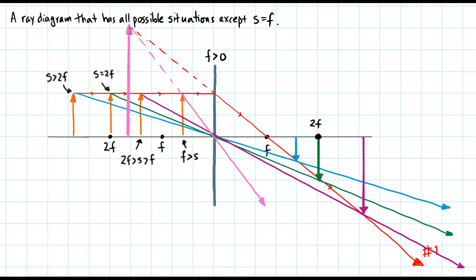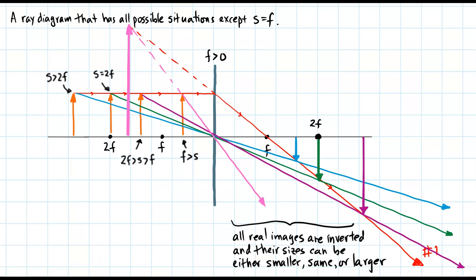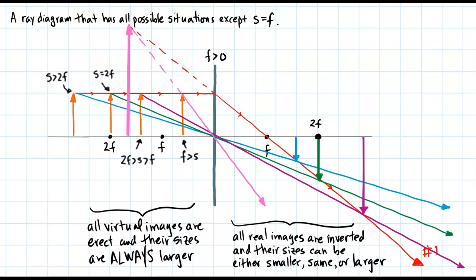In summary: all real images are inverted, and their sizes can be smaller, the same, or larger. All virtual images are erect and their sizes are always larger. This is an important diagram to be able to recreate on your own.